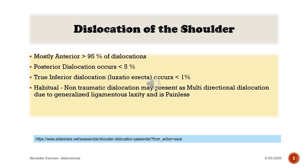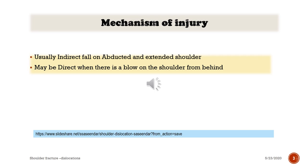Anterior dislocation of the shoulder. Dislocations of the shoulder are mostly anterior — 95% occur anteriorly. Posterior dislocations occur in below 5%. Inferior dislocation, luxatio erecta, occurs in 1%. Habitual non-traumatic dislocation may present as multidirectional dislocation due to generalized ligamentous laxity and is mostly painless.